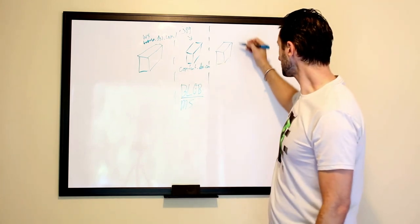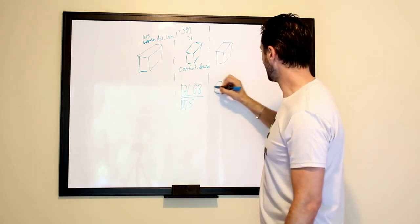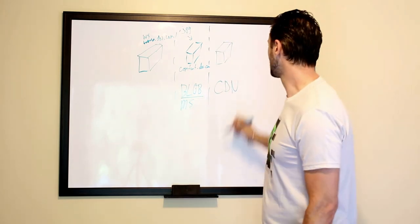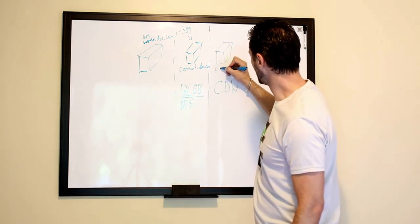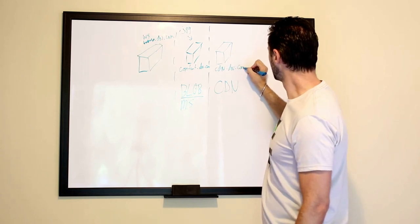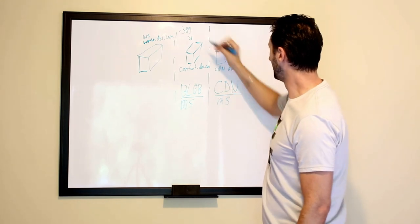Now, secondly, this is where the CDN comes in because the way that the Azure CDN works is it can sit on top of blob storage. So then you can create something like CDN dot your domain name dot com. And again, serve out that asset.